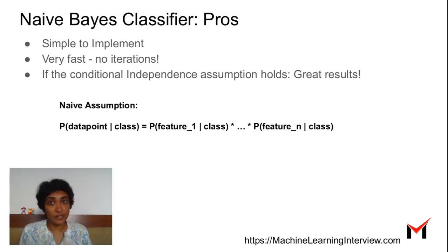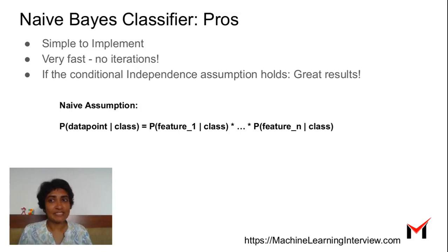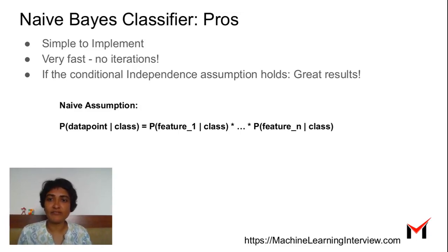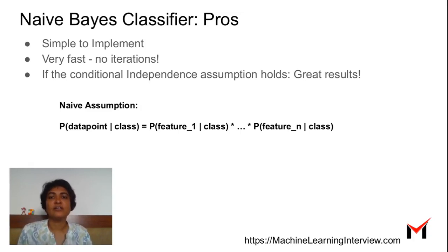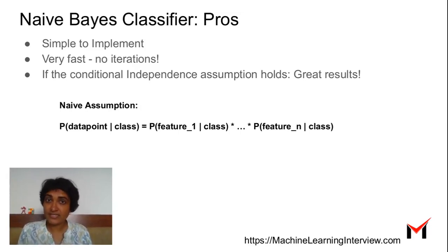The third advantage is that if the conditional independence assumption holds, we get great results. Naive Bayes is called 'naive' because it makes a naive assumption: the probability of seeing a data point given the class equals the product of probabilities of each individual feature given the class. It assumes the features are conditionally independent given the class, and where this assumption holds, Naive Bayes can do very well.